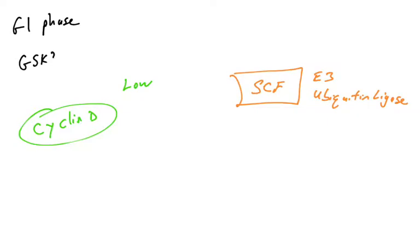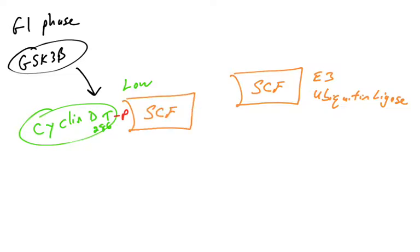So when cells are in G1, the kinase GSK3 beta, which we've spoken about previously, is active. GSK3 beta is an active kinase, and it has many substrates. One of its substrates is the threonine at position 286 in the cyclin D protein. So in cells in G1, GSK3 beta is active and it's phosphorylating cyclin D at this specific threonine. And this phosphorylation increases the affinity for SCF to cyclin D. So now these two proteins have high affinity for one another.